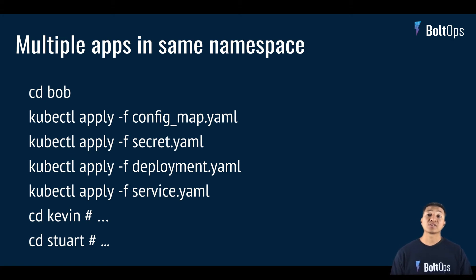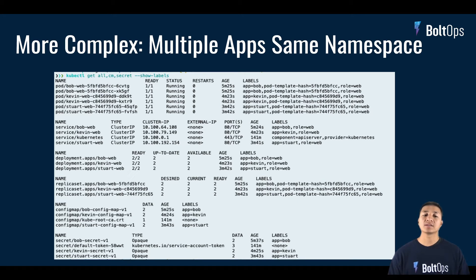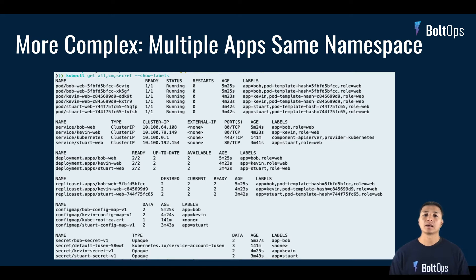Let's say you're also going to start deploying multiple applications. Starting off, most people deploy everything in the default namespace to keep things simple. Here's an example — we cd into bob, run four commands for the bob deployment, then cd into kevin and run four similar commands, and do the same for stewart, so 12 commands total. You end up with all the pods, services, deployments, secrets, and config maps all in the same default namespace. That starts to get a little overwhelming and feels a little dirty, and this is only with three applications. What happens when you get five, six, seven applications? It gets worse and worse, especially with more than two pods running.